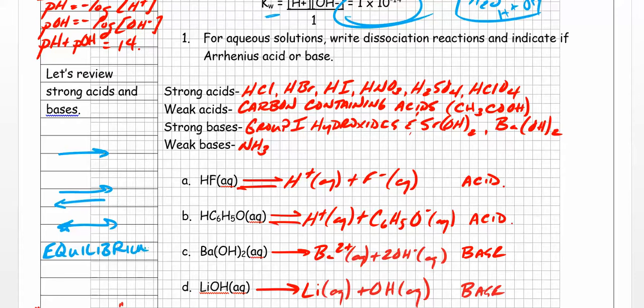Strong acids - there are six, and you've got to memorize them. They are: hydrochloric acid, hydrobromic acid, hydroiodic acid, nitric acid, sulfuric acid, and perchloric acid. Those are the strong acids. Make sure you know those.